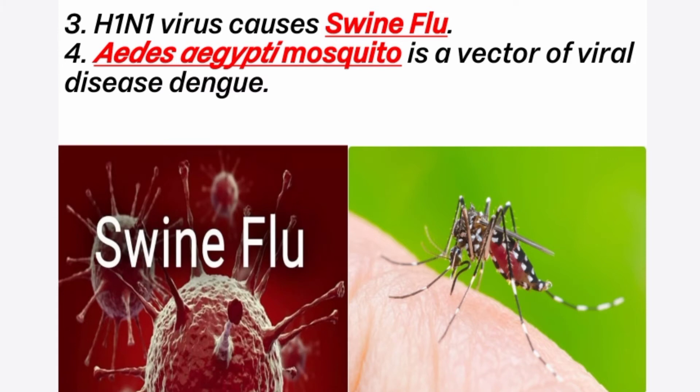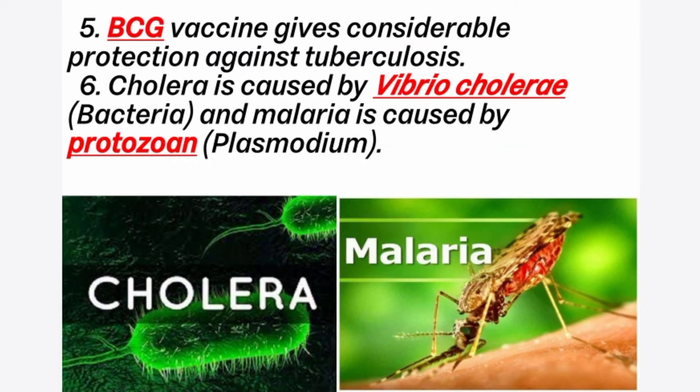4th question: H1N1 virus causes. Answer is swine flu. A vector of viral disease Dengue. Dengue fever is caused by the Aedes mosquito. 5th question: The vaccine that gives considerable protection against tuberculosis. Answer is BCG.